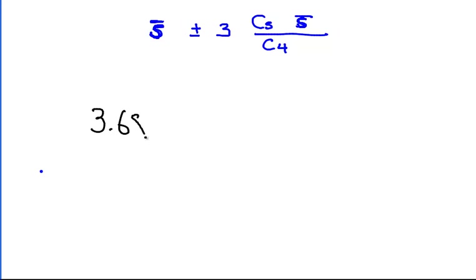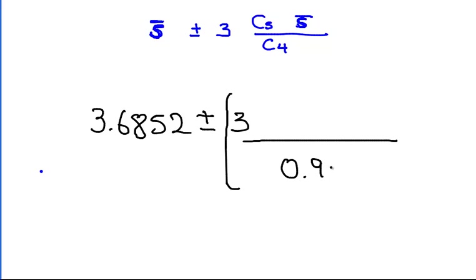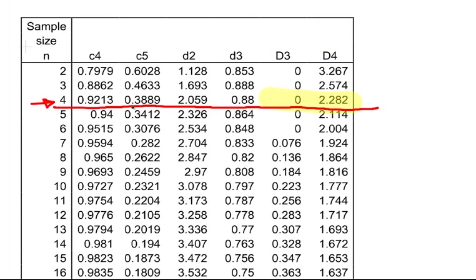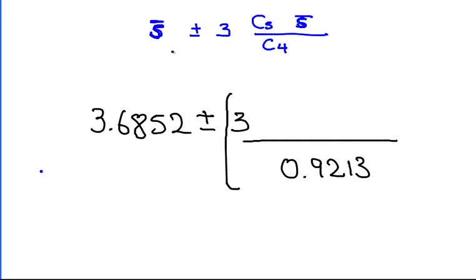That is 3.6852 plus or minus 3 times C5, well we know what C4 is, it is 0.9213. C5 is, we have to go to our control limits, our correction factors. There we have it there, 0.3889. C5 for batch size 4, 0.3889 times S bar is again 3.6852.